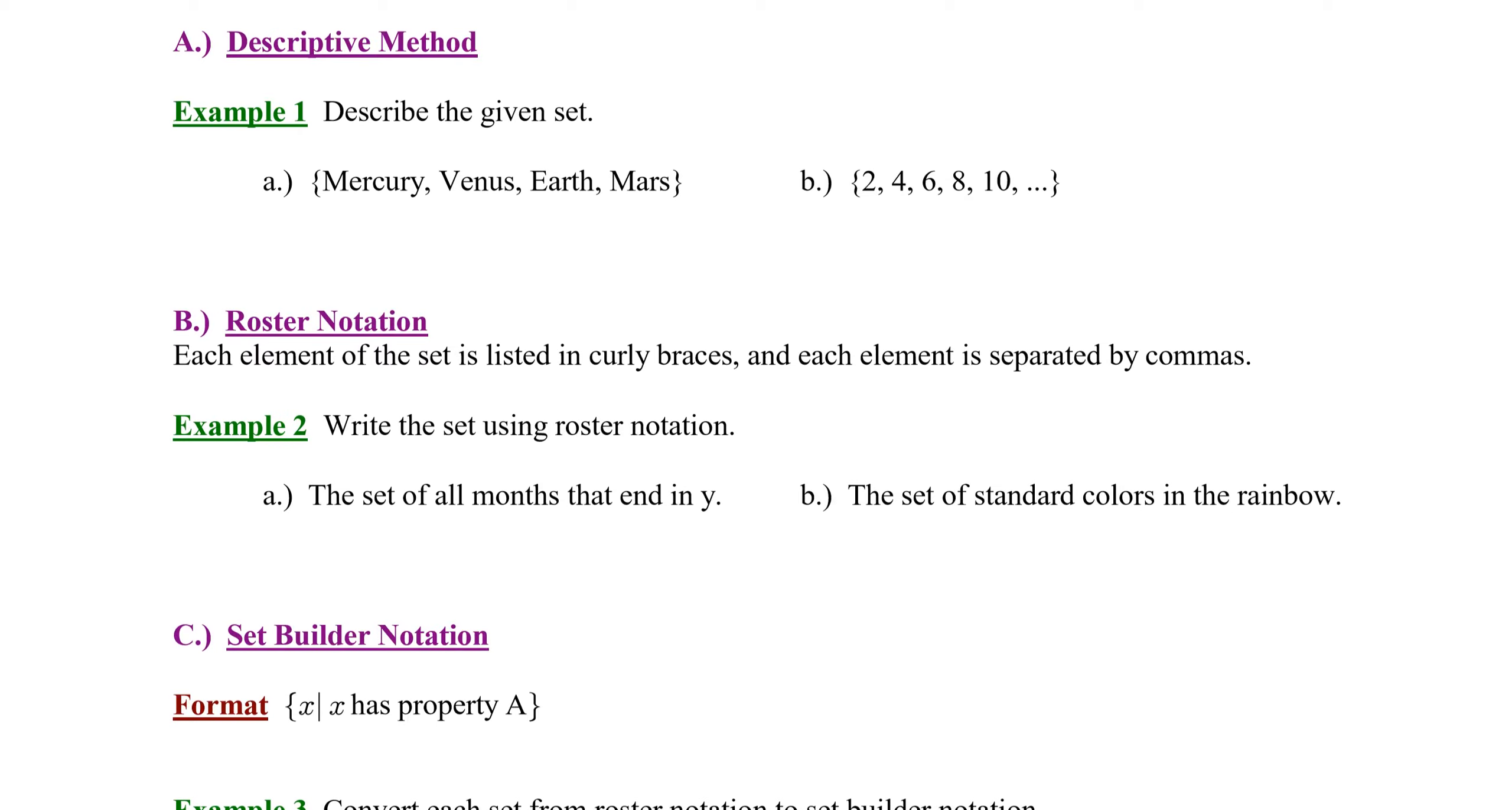Example one, describe the given set. So, in example A, we have the set containing Mercury, Venus, Earth, and Mars. The first thing I want you to notice in this set is the curly braces. A set is always enclosed with curly braces. And notice the members of the set are separated by commas. That's how we distinguish one member from another.